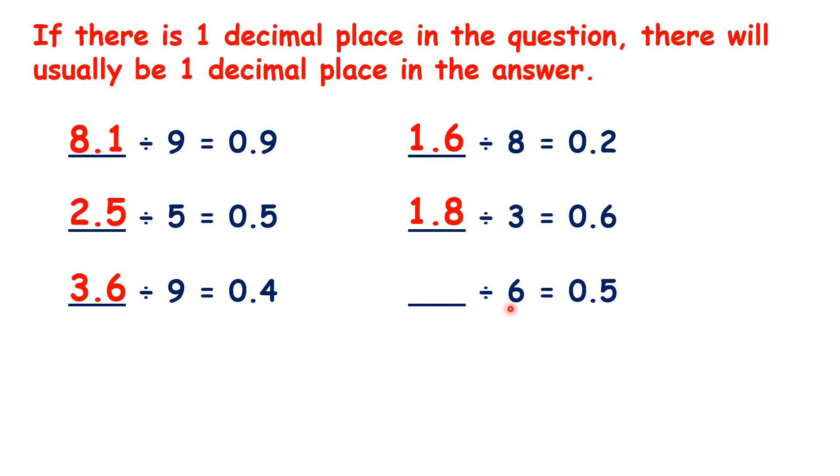And 30 divided by 6 is 5, so we have 3.0. But we know that 3.0 is just 3. So for this last question, we have a whole number as our answer.